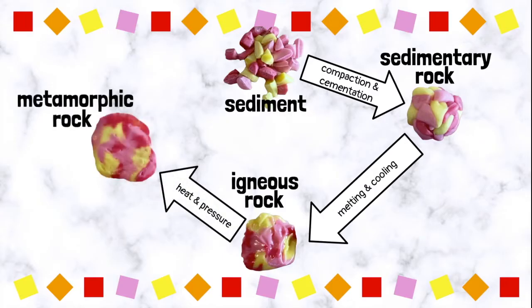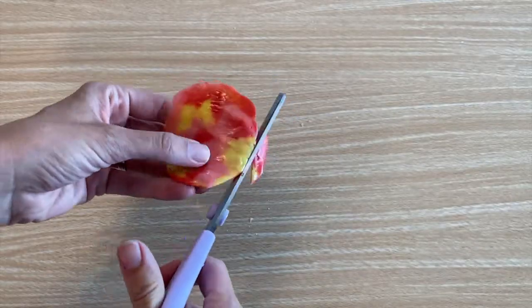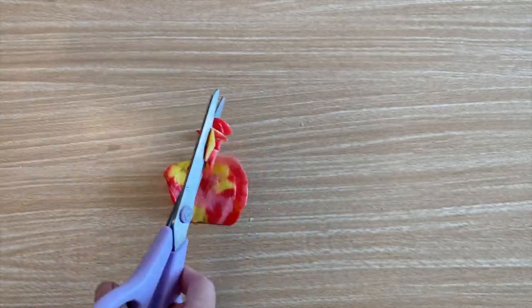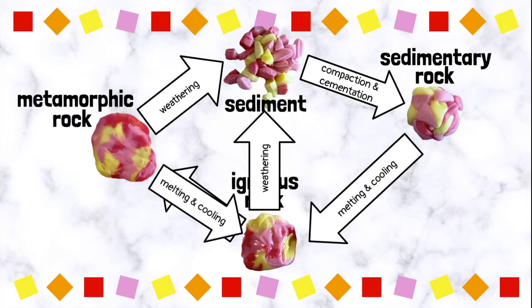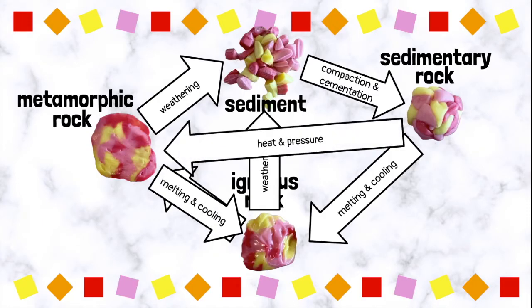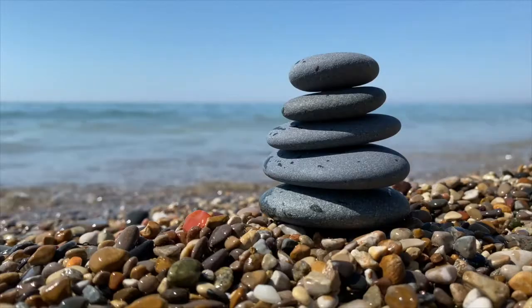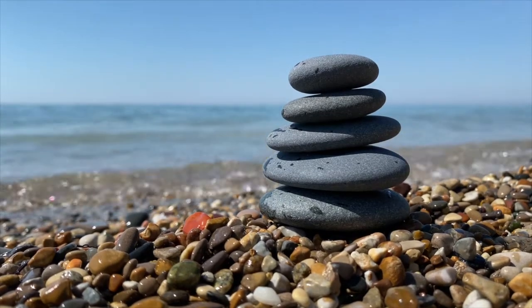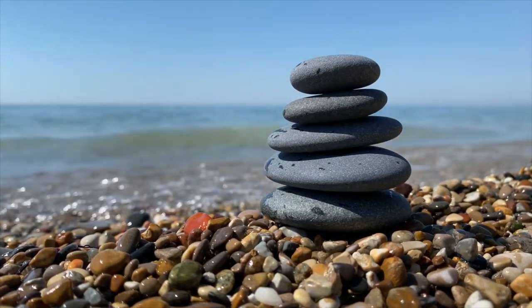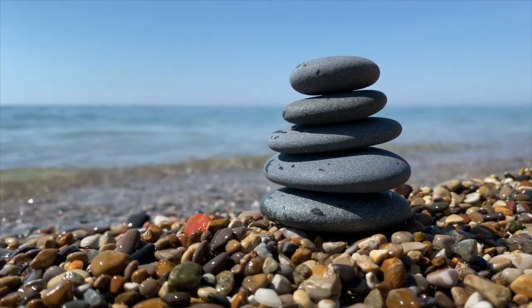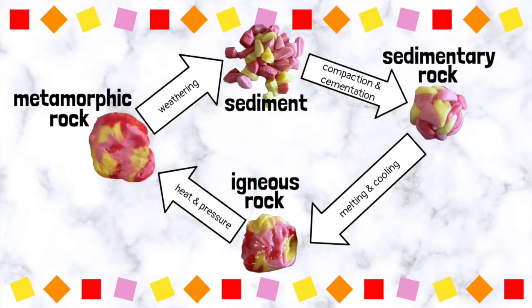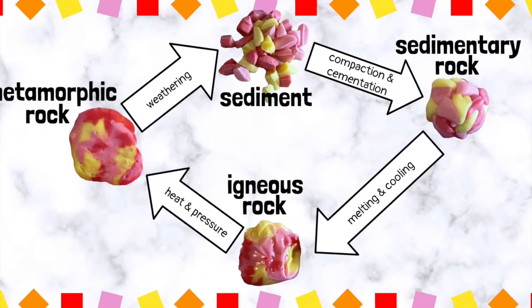But the cycle doesn't stop there. That metamorphic rock can then be weathered back into sediment. Or maybe the igneous rock gets weathered into sediment. Or the metamorphic rock melts and cools into igneous. The sedimentary can be turned into metamorphic. The cycle continues. All over Earth and even under its surface, rocks are changing and being recycled into new and different types of rocks — sedimentary, igneous, and metamorphic.